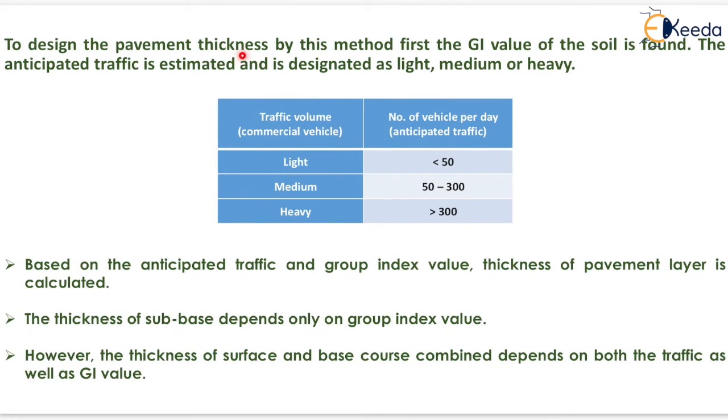To design the pavement thickness by this method first the GI value of the soil is found. The anticipated traffic is estimated and is designated as light, medium or heavy. Now for light traffic volume the number of vehicle per day will be less than 50. For medium it will be in the range of 50 to 300 and for heavy traffic volume it should be greater than 300 vehicles per day. Based on the anticipated traffic and group index value thickness of pavement layer is calculated. The thickness of subbase depends only on group index value. However the thickness of surface and base course combined depends on both the traffic as well as the group index value.